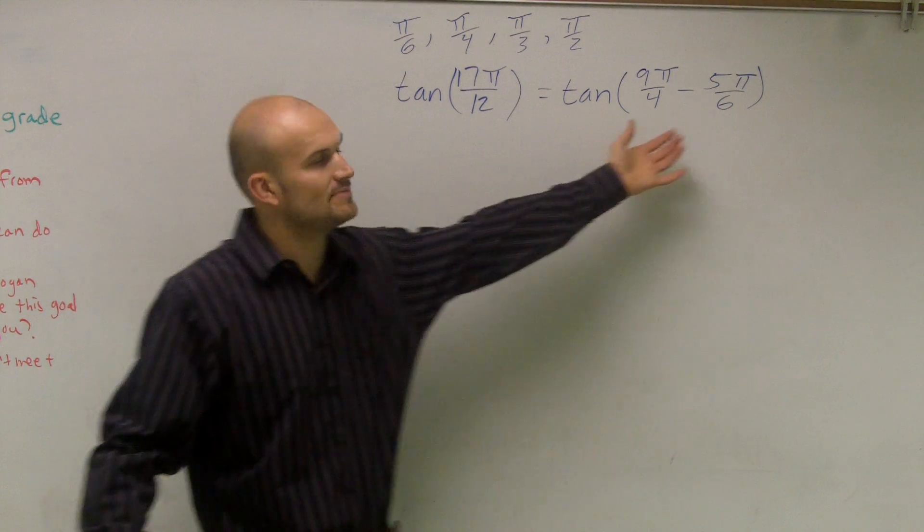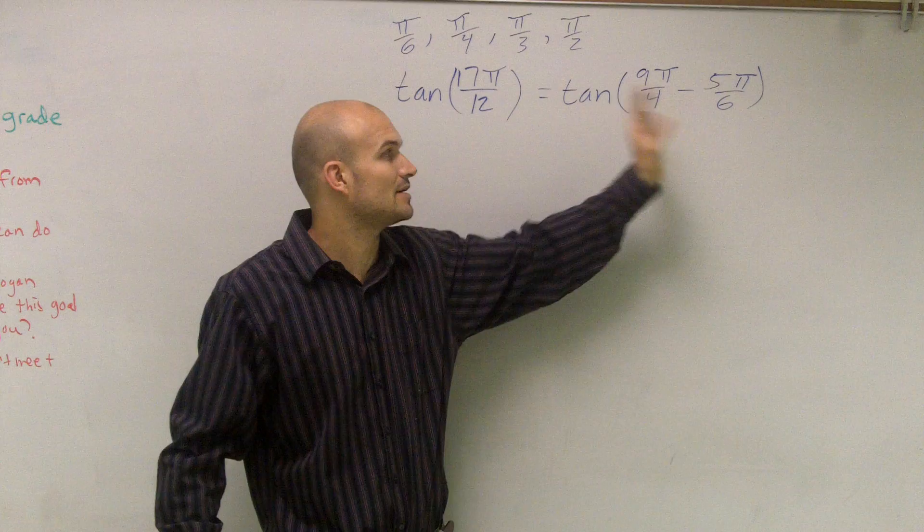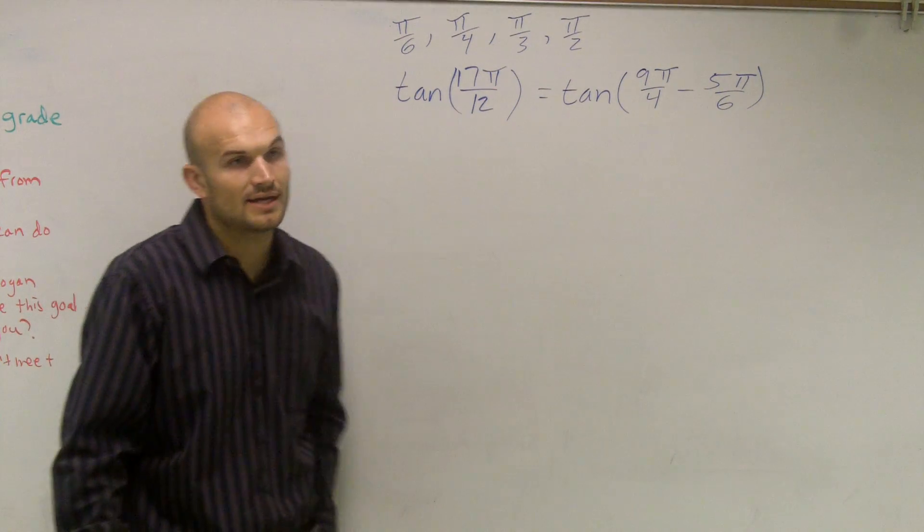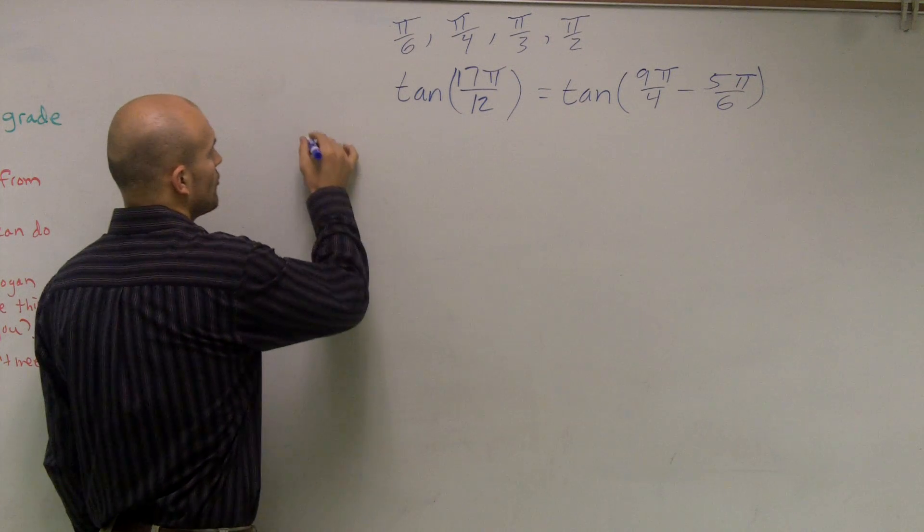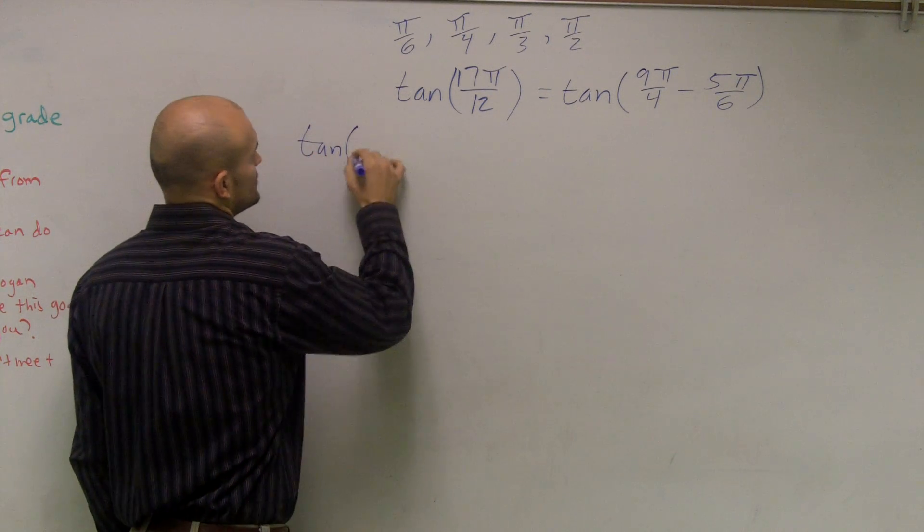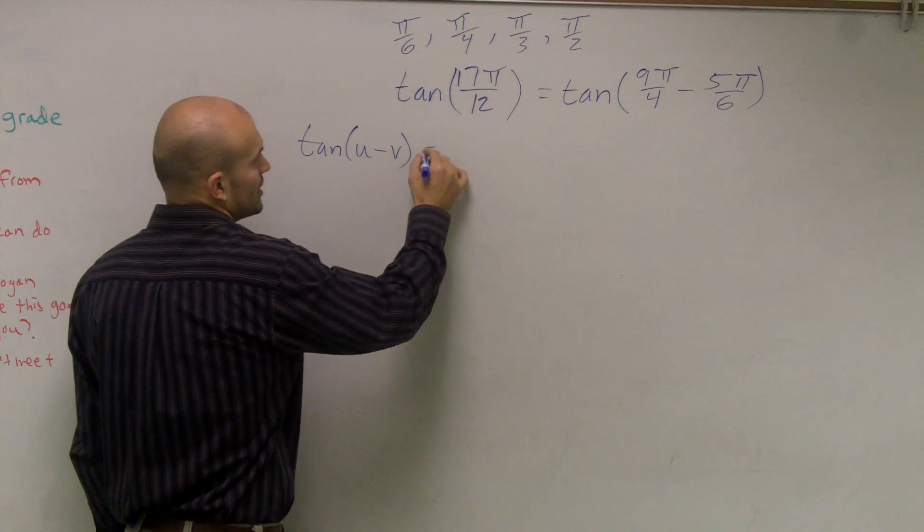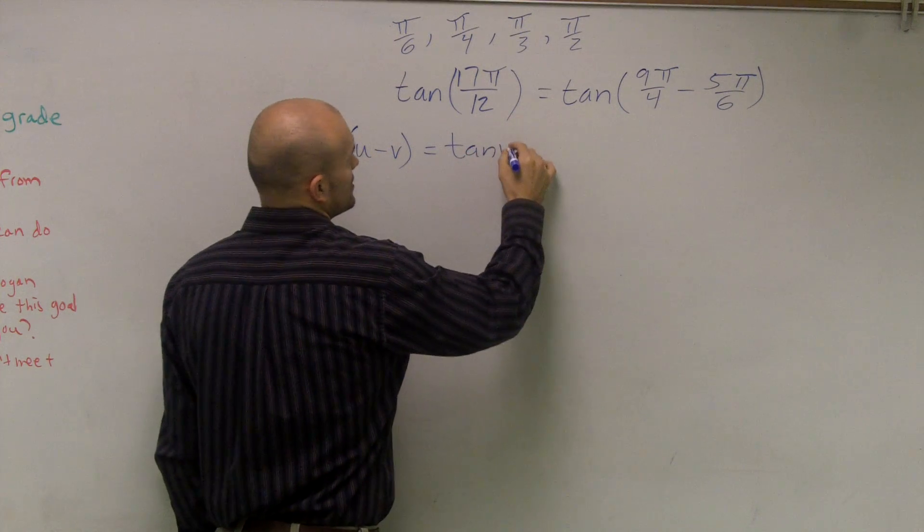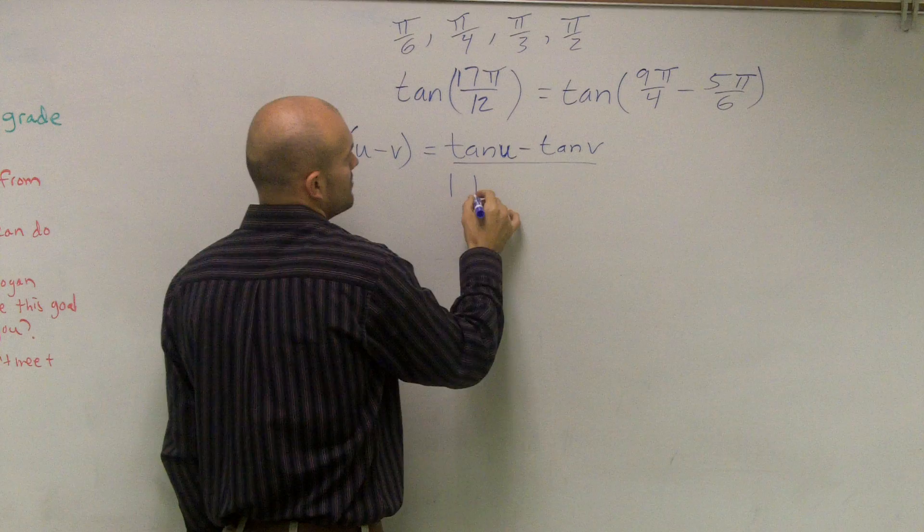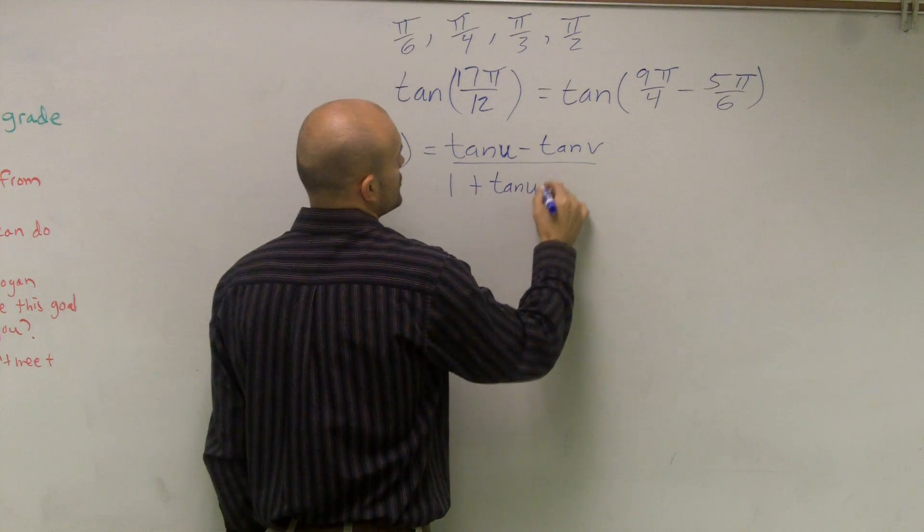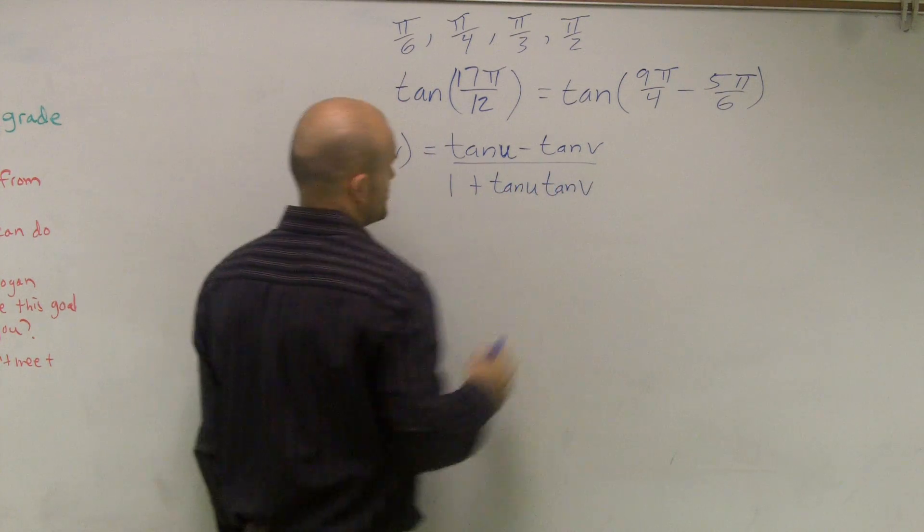So when I get these to be the common denominators and I subtract, I am getting 17π divided by 12. So now the next thing I need to do is use our formula. So the tangent of two angles subtracted from one another equals the tangent of u minus the tangent of v divided by 1 plus the tangent of u times the tangent of v.